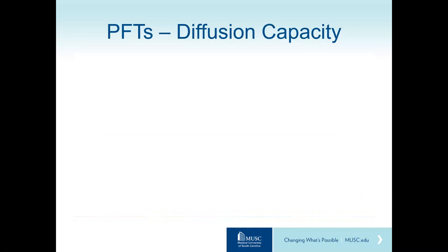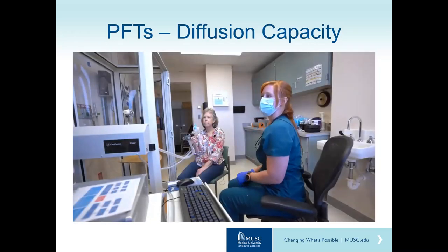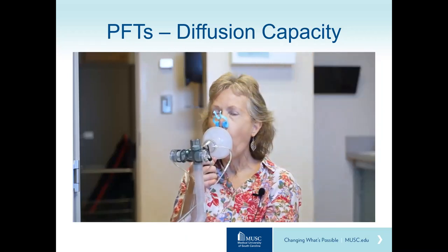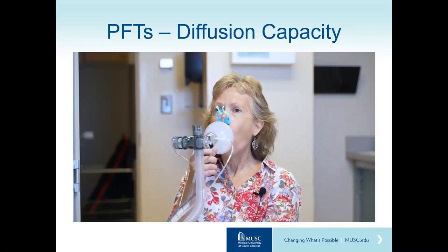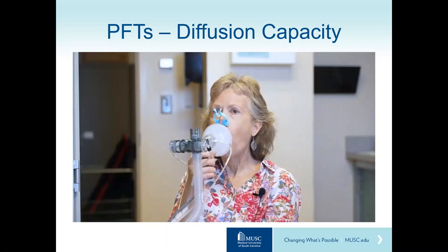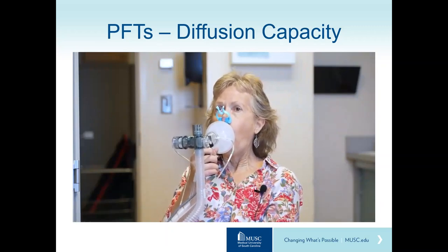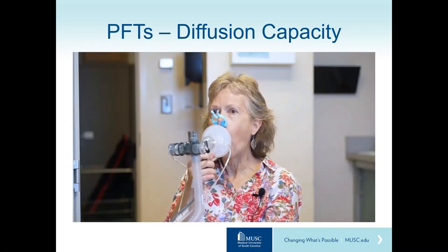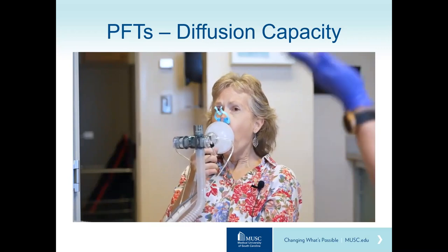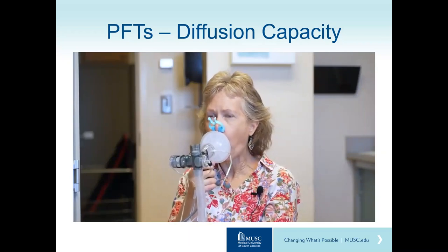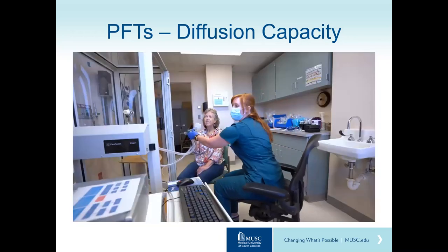Another important pulmonary function test is the diffusion capacity. The patient breathes normally through the mouthpiece, then exhales gently all the way, takes the biggest breath possible filling the lungs completely, holds for approximately ten seconds, then blows it all out. This test measures how well gases transfer across the lung membrane.